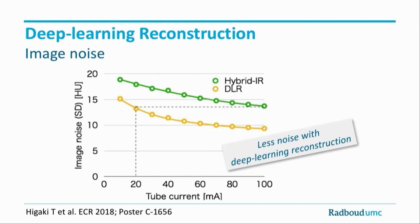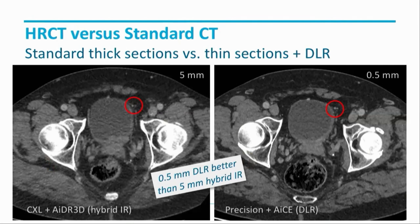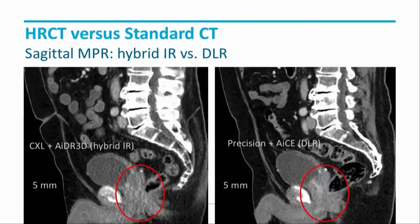This is how it looks in clinical practice. Hybrid iterative reconstruction on an older scanner at one millimeter sections — the joint space in the hip is not clearly defined and there's quite a bit of noise. On the other side, a deep learning reconstruction called ACE on the Canon scanner at 0.5 millimeter sections for high-resolution CT: even compared to five millimeter sections on the regular scanner, the 0.5 millimeter images are much superior in image quality, noise, and spatial resolution. On sagittal reconstructions, the classic image noise patterns in the center of the scan field — for example in the region of the prostate — disappear, giving excellent image quality in that area.